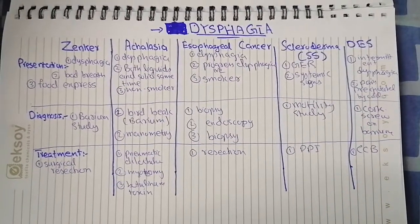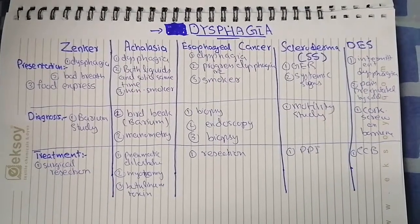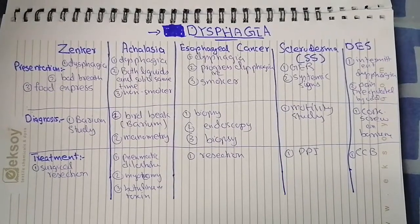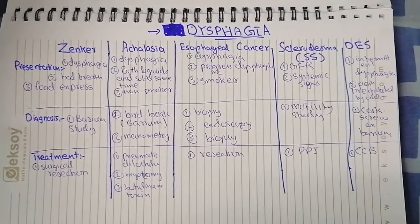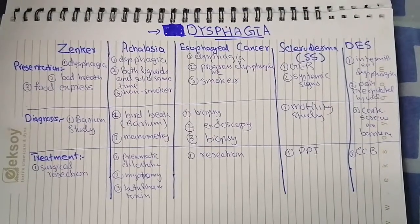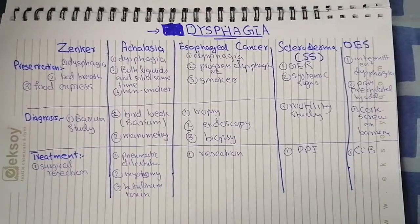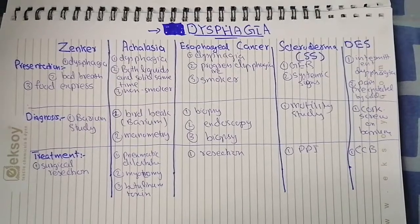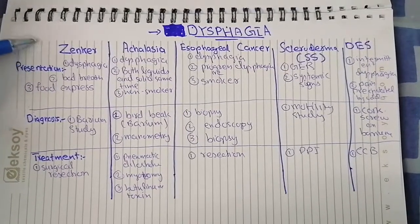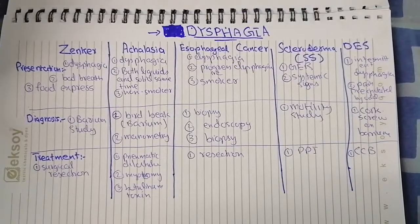To start, there are five diseases which I think are more important and which we can confuse on the basis of their presentation, diagnosis, and treatment. After this video, you will not have any problem differentiating them. The first is Zenker's diverticulum.